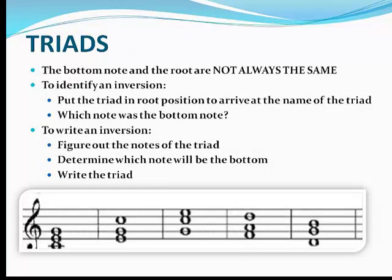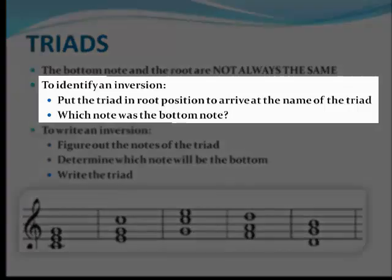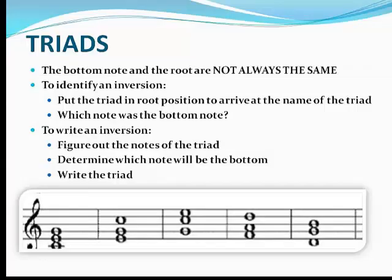Remember, the bottom note and the root of the triad are not always the same. You will often need to place the triad in root position to be able to identify the triad and the inversion. The first step is to put the triad in root position. When it's in root position, it will be line-line-line or space-space-space. It's easiest to name the triad when it's in root position. The bottom note will always tell you what the inversion is: if the root is the bottom note, it's root position; if the third is the bottom note, it's first inversion; if the fifth is the bottom note, it's second inversion.